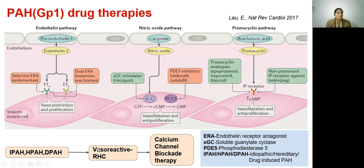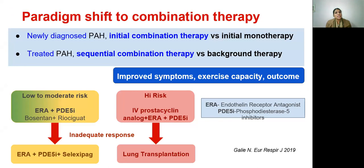There is a paradigm shift to combination therapy because, whether newly diagnosed or treated, combination therapy has been found to have superior outcomes in terms of symptoms, exercise capacity, and survival. Those with low to moderate risk are started upfront on ERA and PDE5 inhibitors, and in case of inadequate response, selexipag is added. Those at high risk should be commenced on IV prostacycline analogues along with ERA and PDE5 inhibitors and referred for lung transplantation.